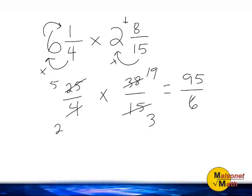Now we have an answer that is an improper fraction. And we must simplify this by changing it back into a mixed number. And we do this by taking the numerator and dividing it by our denominator. So we are going to take ninety-five and divide it by the number six.